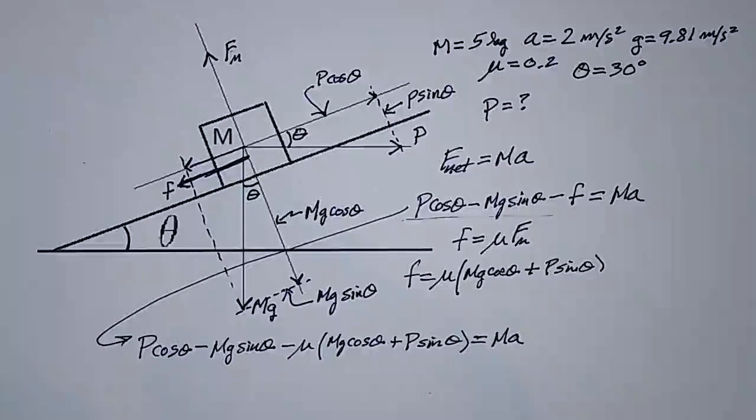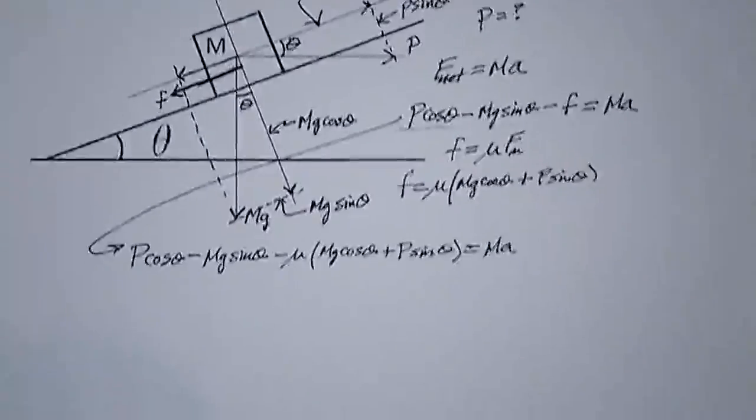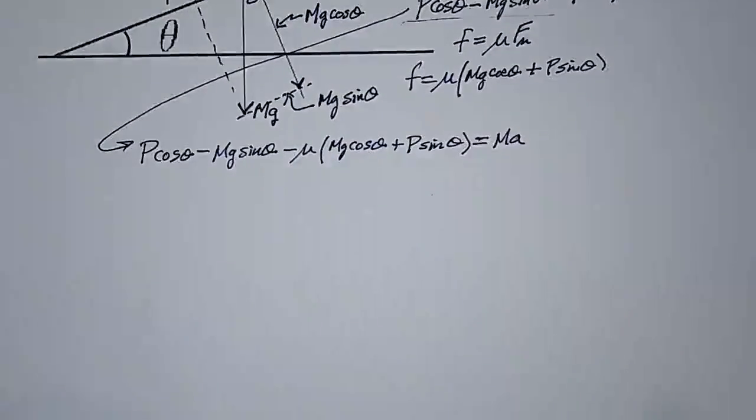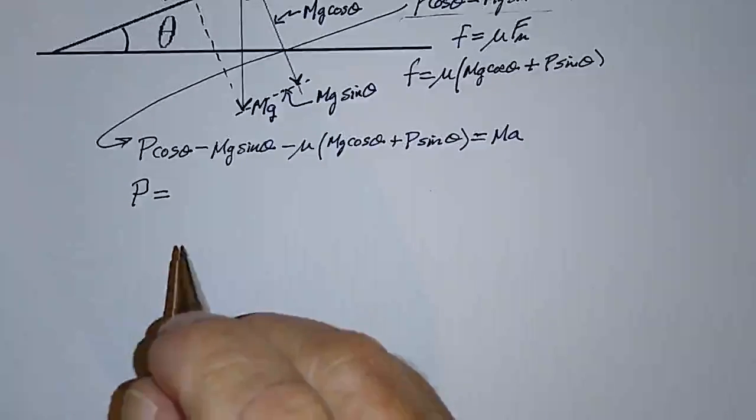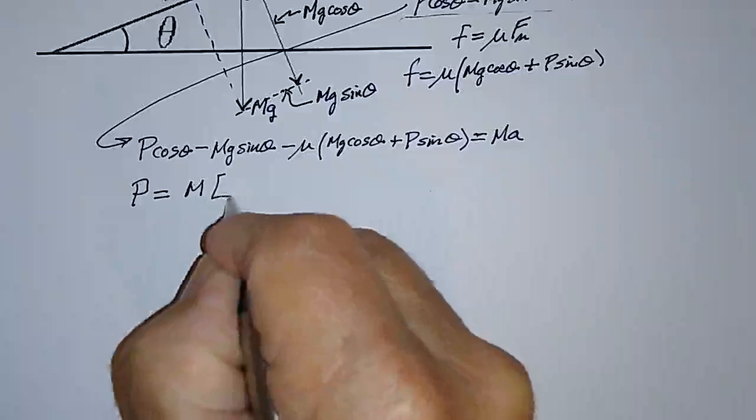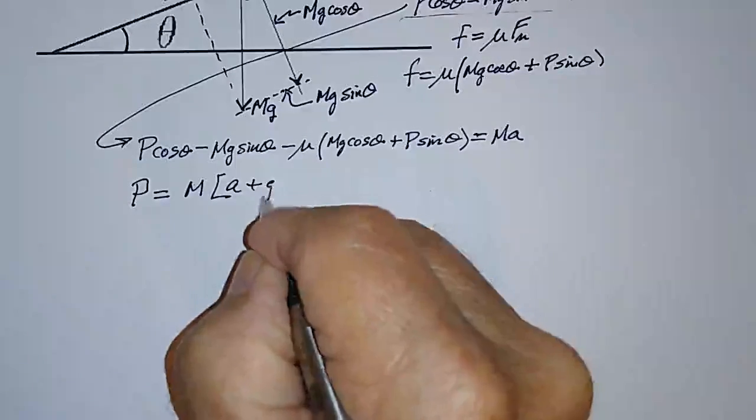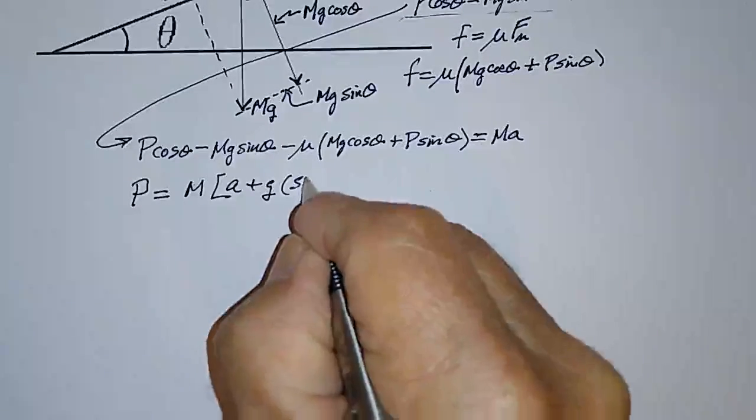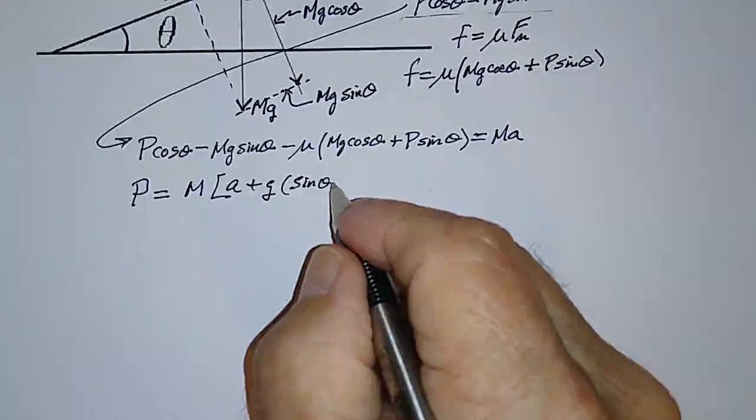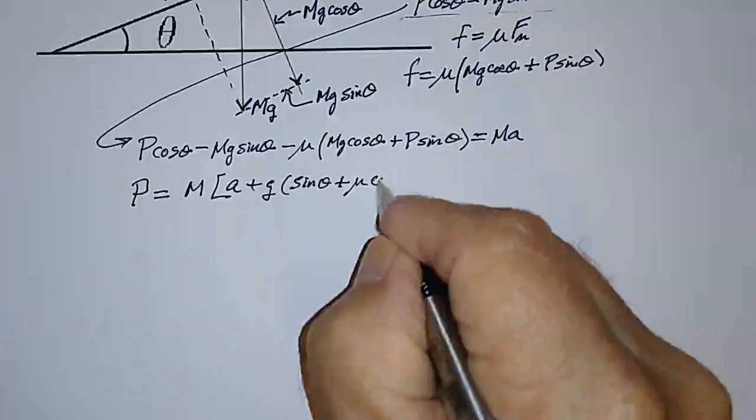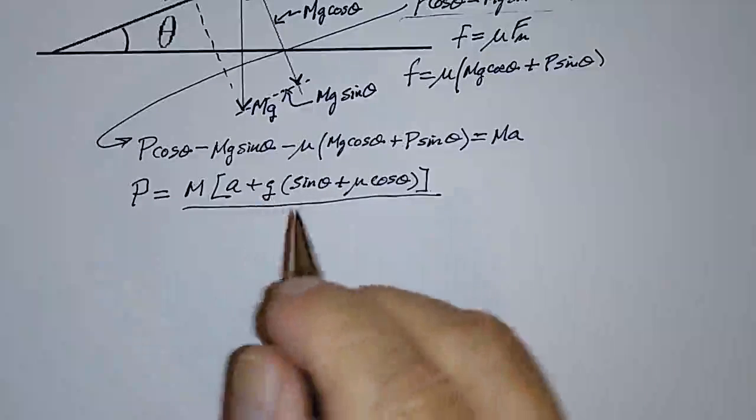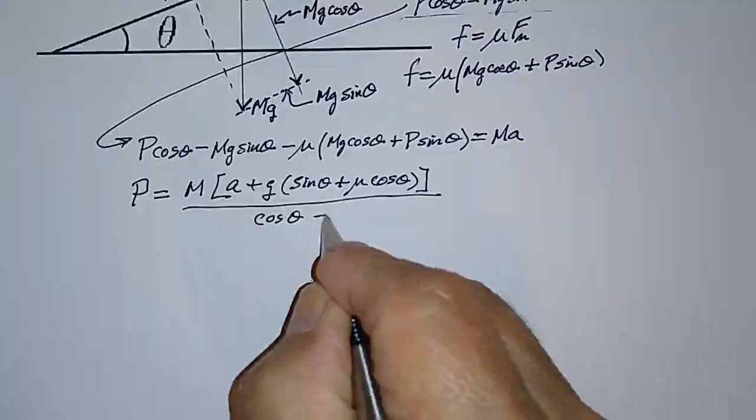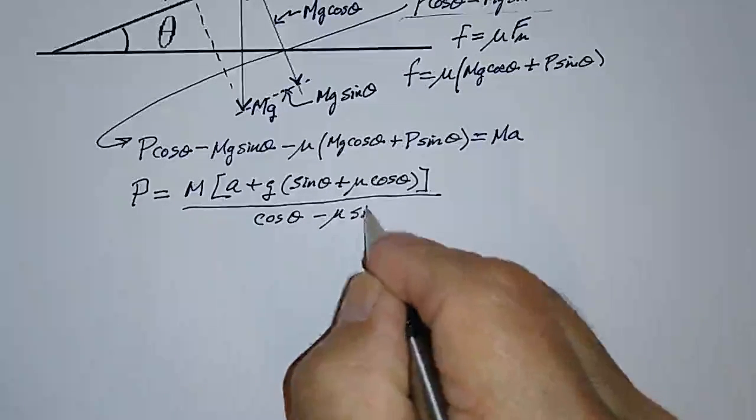And remember, what we want to solve for is P, and rather than go through all of the algebra necessary, I'm just going to write down the solution. And the solution is P is equal to M times A plus G times sine theta, plus mu times cosine theta, and all of this is divided by cosine theta, minus mu times sine theta.